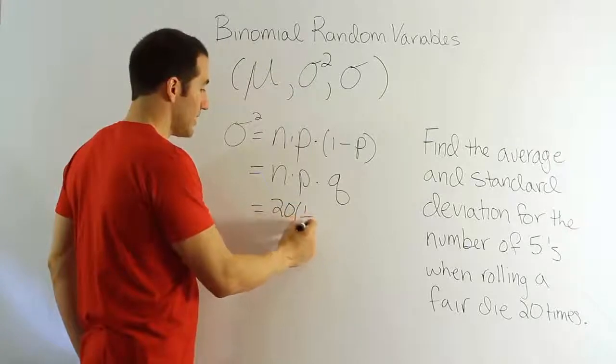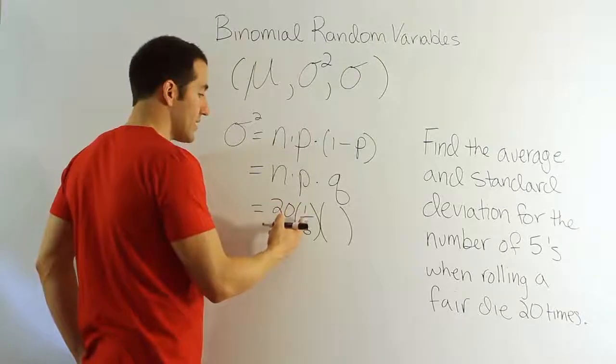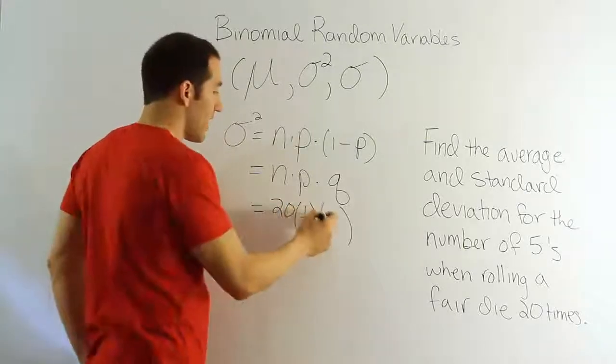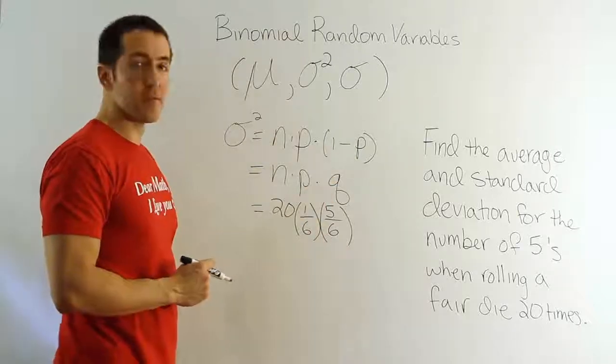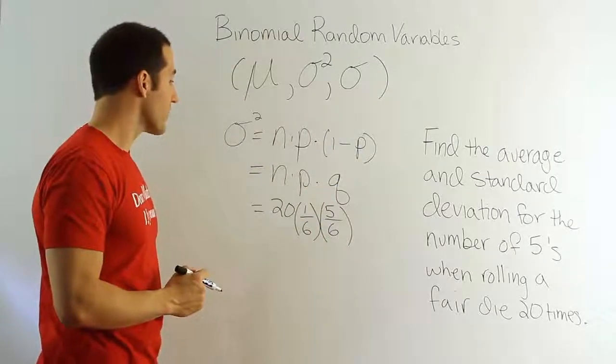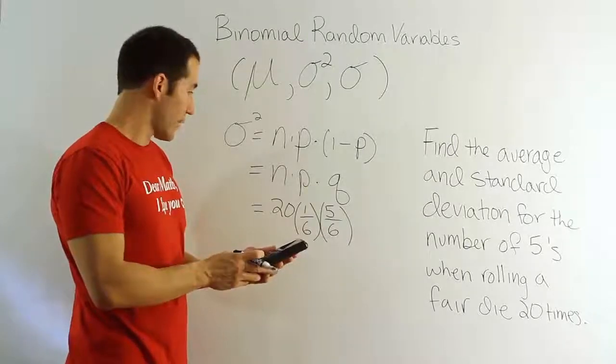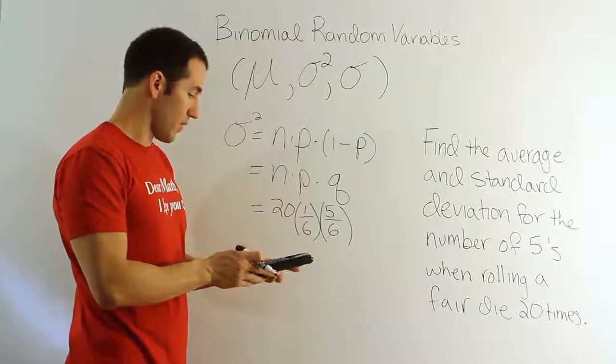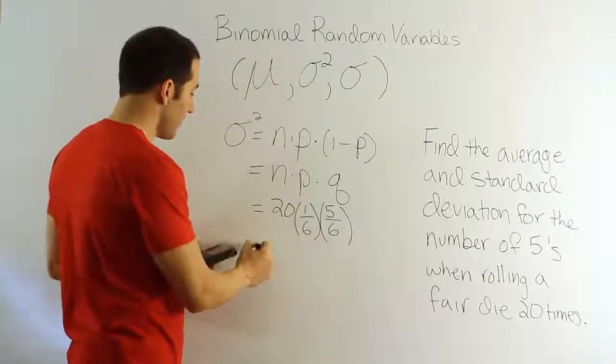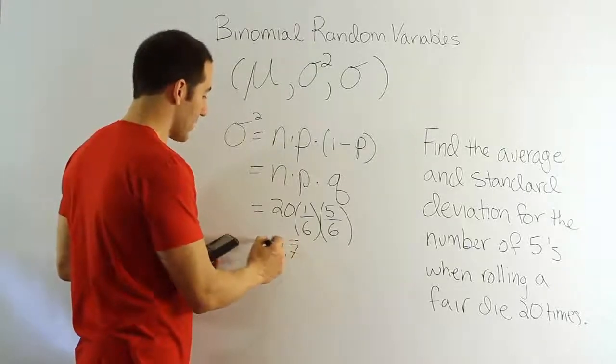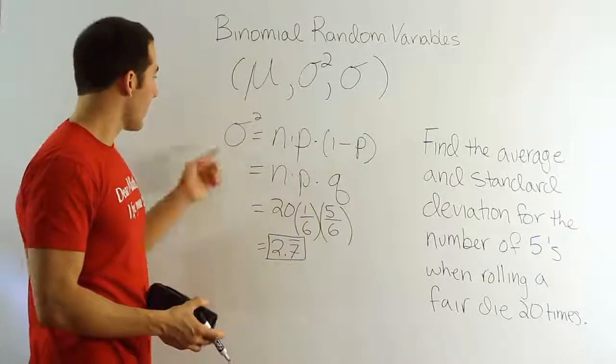It's 20 times 1 sixth times the q. And again, if there's one way to succeed out of six possibilities, there are five ways to fail out of the six possibilities. And so that gives you the q, the probability of failure. And then again, you would just work it all out. So let's just figure it out by using my calculator here. So I'll have 20 times 1 divided by 6 times 5 divided by 6. And when we're done with that, we get the answer 2.7 repeating. So that's our variance for the problem.